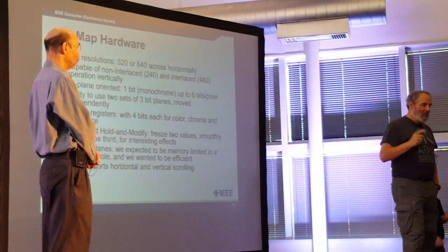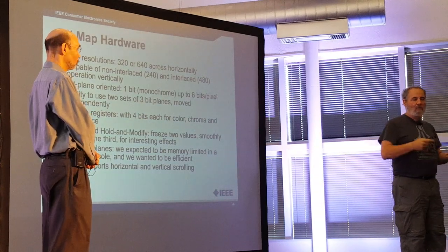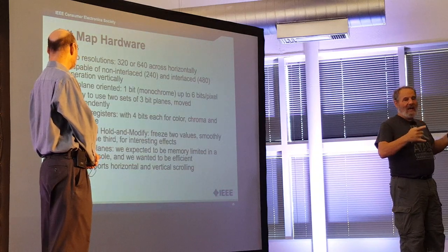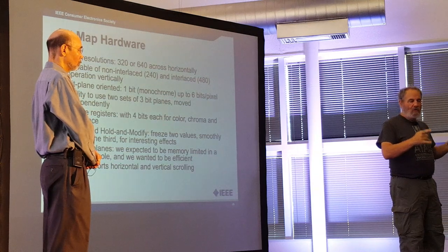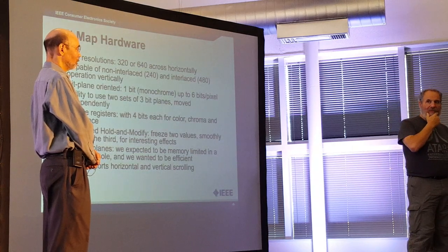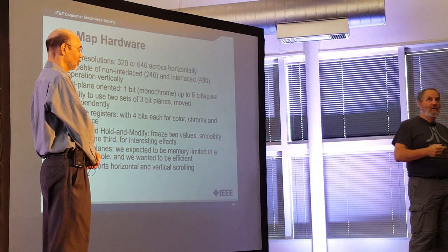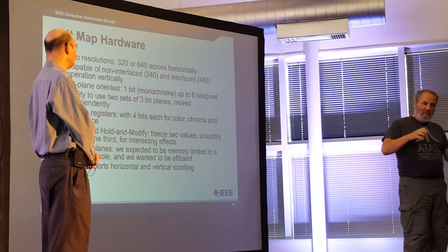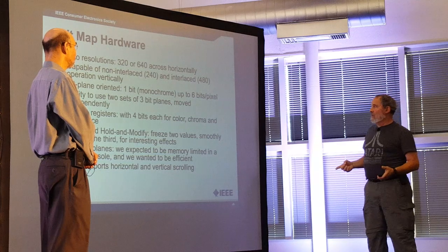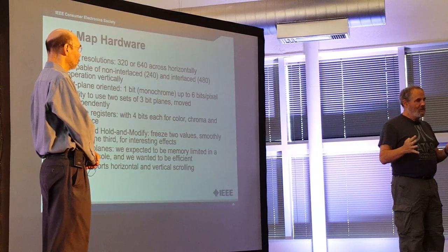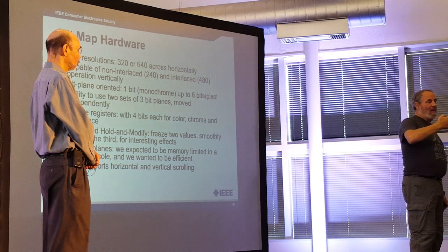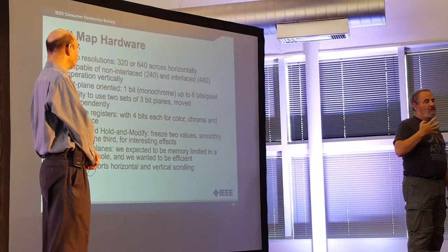We were thinking about building several different machines, with the lowest level being a pure game console using 16K-bit DRAMs — giving 32K bytes total, or 16K words. We had room for some program, a bitmap display, and not much else. To be very flexible, we could make a monochrome display or stack up to 6 bit-planes in parallel, giving 64 different colors.